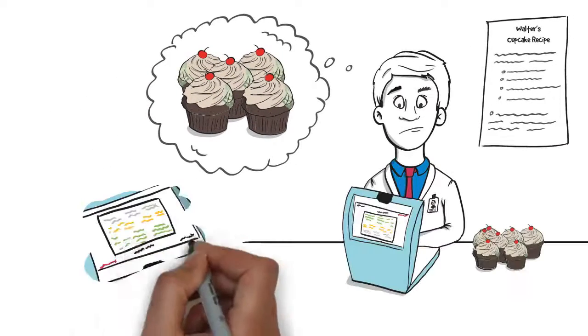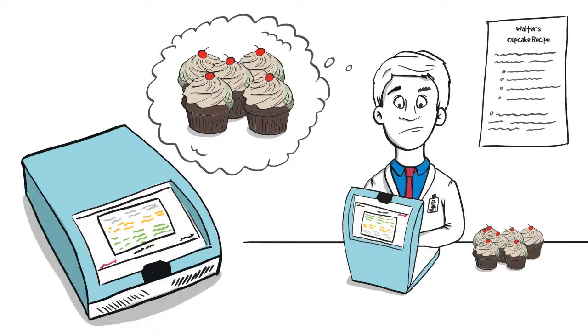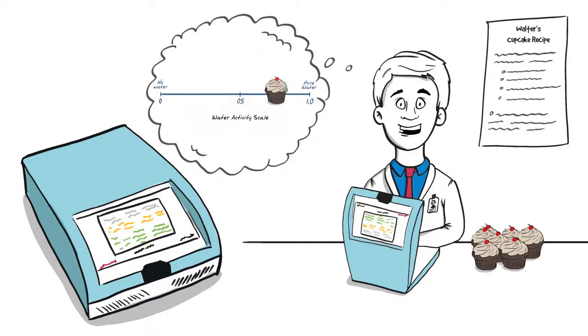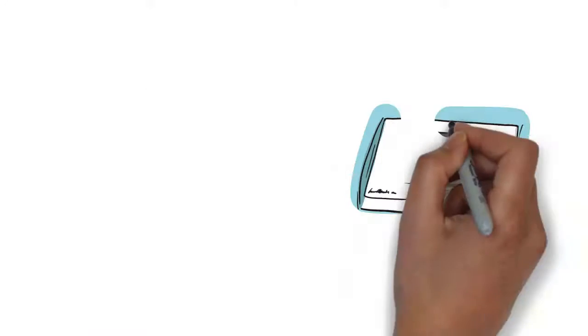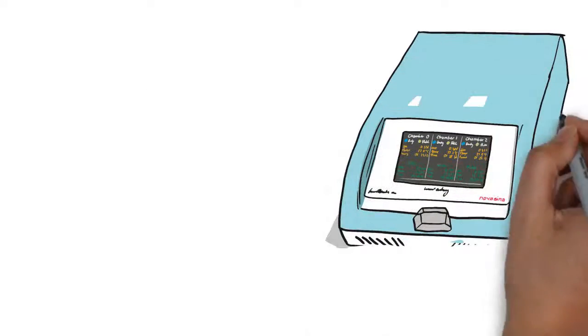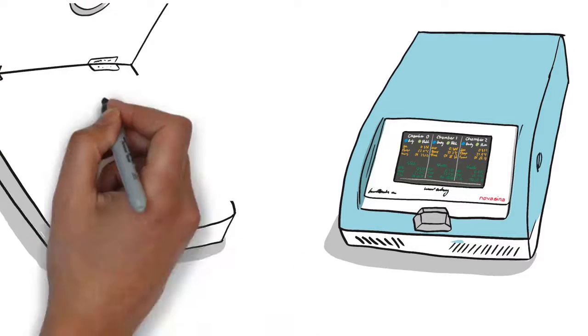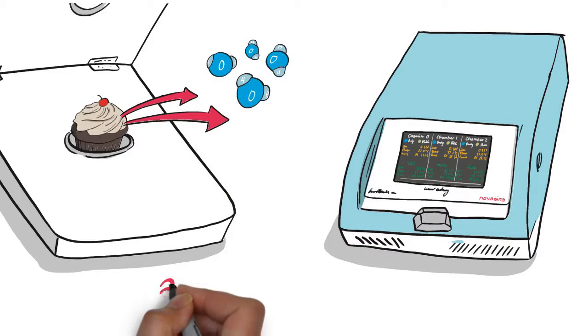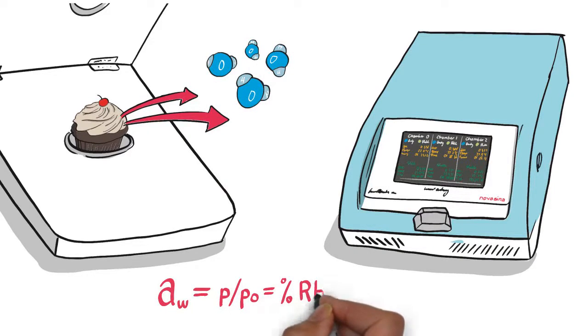If Walter had a Novasina water activity meter, he would have known that the water activity level in his cupcake is too high and he could adjust his recipe to avoid spoilage. Walter's Novasina Water Activity Meter is measuring the free water that can leave the product. It effectively detects this unbound water by measuring the equilibrium relative humidity over the surface. This value is then converted into a water activity measurement.